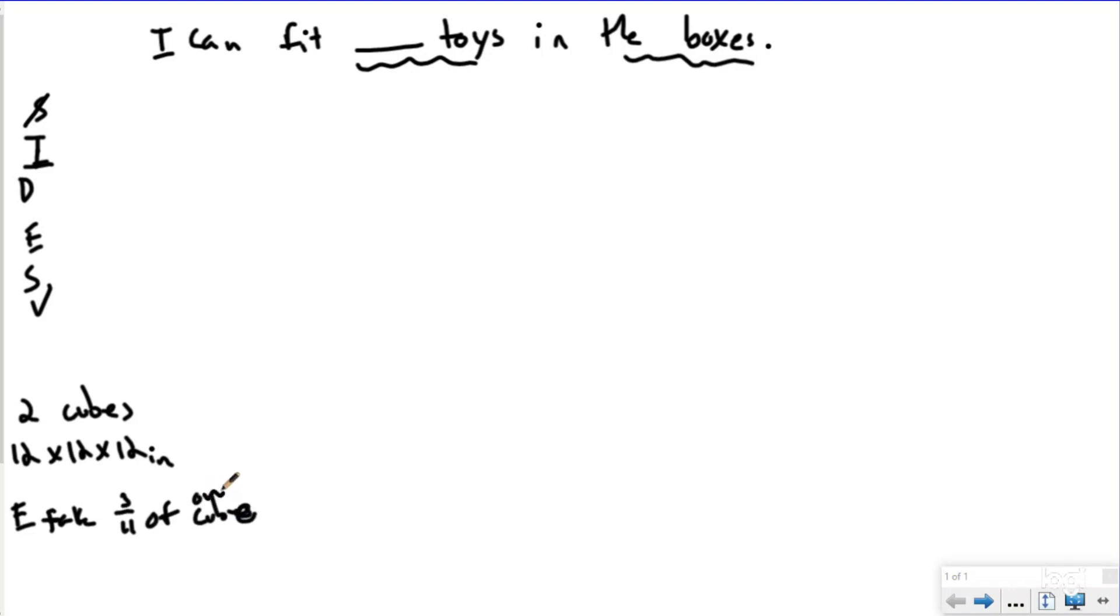I'm just going to go ahead and write down here what I would have identified in the word problem. And that is there are two cubes, and each one is 12 by 12 by 12, and that is inches was the unit for that. I also know that Elijah, which is my son, I'm going to put E, he is going to take up three-fourths of one of the cubes. And I also know that the toys averaged out to be six cubic inches.